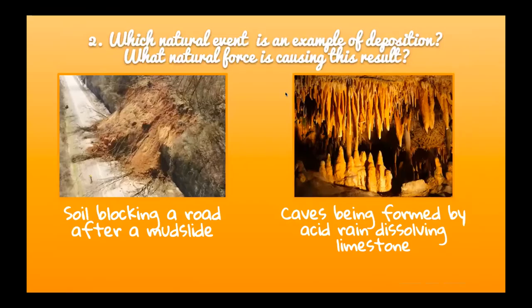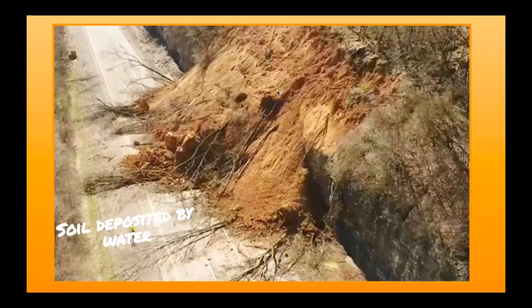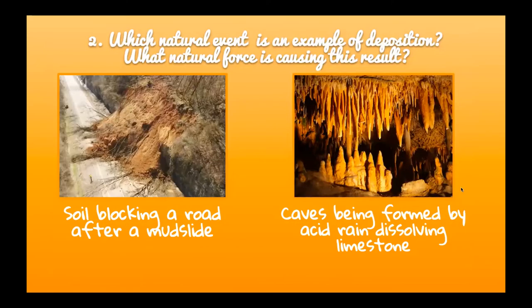Question two: which natural event is an example of deposition? On the left: soil blocking a road after a mudslide. On the right: caves being formed by acid rain dissolving limestone. The correct answer is the mudslide — soil deposited by water. The mudslide moved the soil and dropped it on the road. Caves formed by acid rain dissolving rock is chemical weathering.